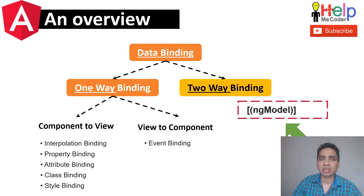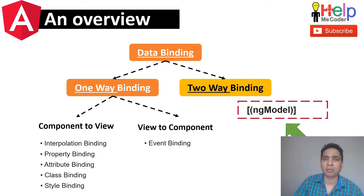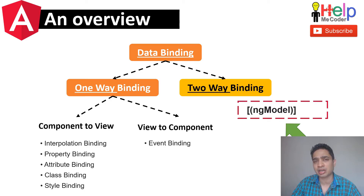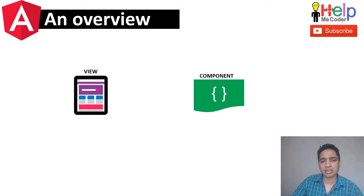Data binding can be categorized basically into one-way binding and two-way binding. One-way binding means transferring data from either the component class to the view side, or from the view side to the component class. There is also two-way binding, which is done using the ngModel directive.